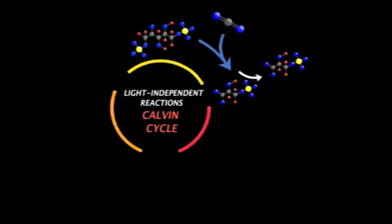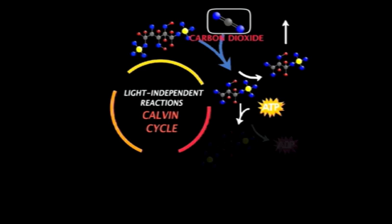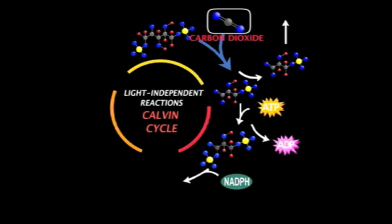Now the cycle repeats itself with the fixation of a second molecule of CO2. Note that one repetition of the Calvin cycle is required for each atom of carbon that is added or fixed to a carbohydrate molecule.